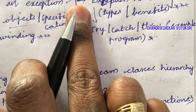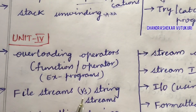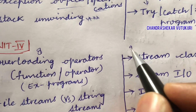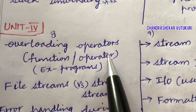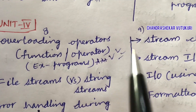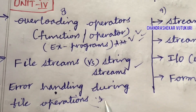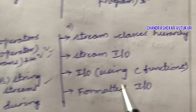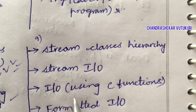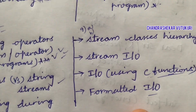Dear students, while preparing, do not prepare the short questions and long questions separately. Try to work out concept-wise so that you can answer both long and short questions asked in the examination. For Unit 4 — question numbers 8 and 9 — overloading operators, function overloading, and operator overloading along with example problems are the topmost questions. File stream versus stream strings, error handling during file operations may occur in 8A/8B. Stream classes hierarchy, stream input/output, I/O using C functions, and formatted I/O may occur in 9A/9B.